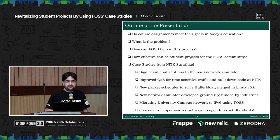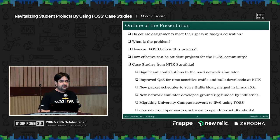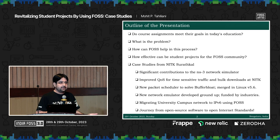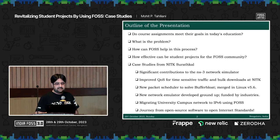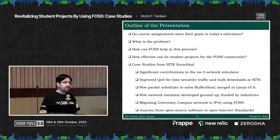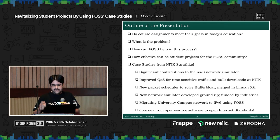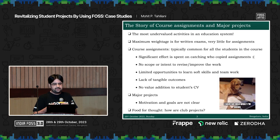This is the outline of my presentation. First, what is the effectiveness of the course assignment in today's education system? We need to ask that question. Second, where is the problem in that system? Third, how can FOSS help us improve in this particular process? And how effective do you think a student project would be for a FOSS community? If I offer a fourth semester student from my college to a FOSS community, what do you think that student can do? I have six case studies to tell you, and I have a dedicated slide for each one.